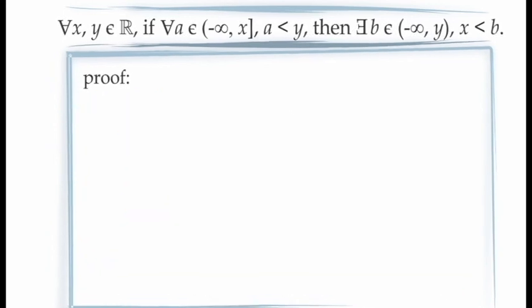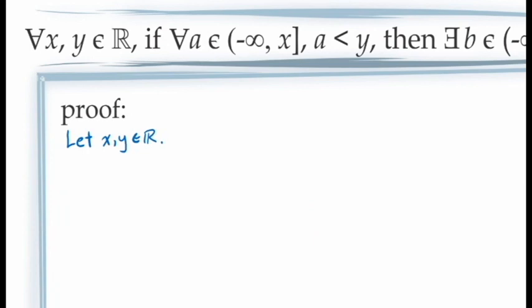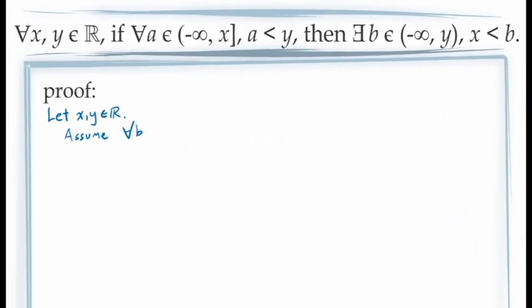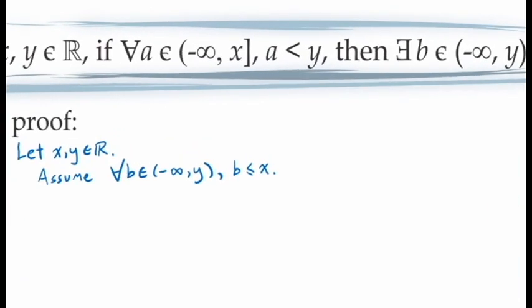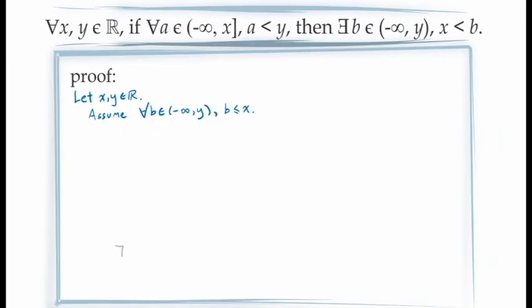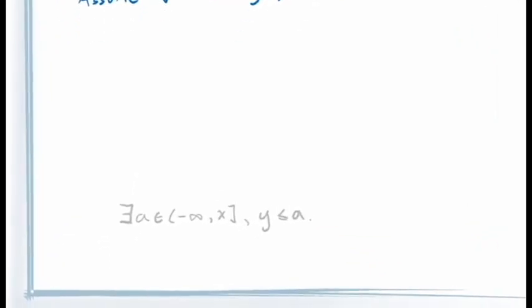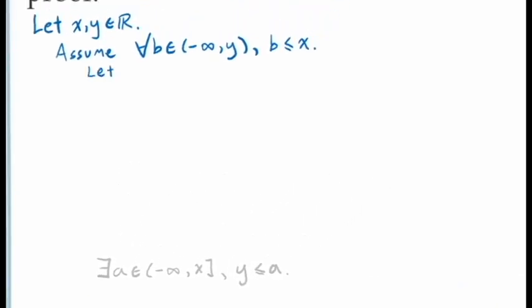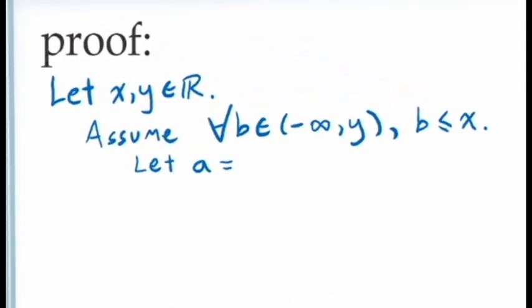Let's now prove the same thing using a proof by contraposition, again letting x and y be arbitrary real numbers. If we're using a proof by contraposition, our assumption must be the negation of the consequent: for all values of b in the open interval from negative infinity to y, b is less than or equal to x. The statement we're required to demonstrate is the negation of the antecedent: there is at least one value of a in the closed interval from negative infinity to x for which y is less than or equal to a. This statement includes an existential quantifier, so we need existential generalization.